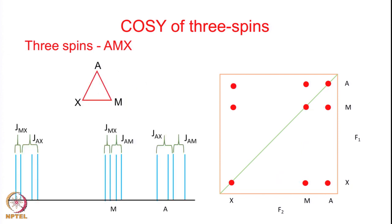There is another type of 3-spin system - the so-called triangular AMX spin system - where each spin is coupled to the other two. A is coupled to X, A is coupled to M, and M is also coupled to X. Therefore all 3 spins appear as doublets of doublets, but their fine structure will depend upon the relative magnitudes of the coupling constants. For the X spin you have the JMX and JAX couplings; for the M spin you have JMX and JAM; and for the A spin you have JAX and JAM.